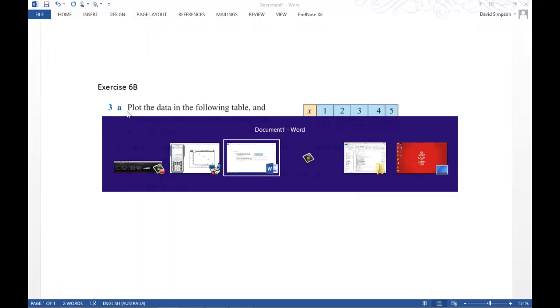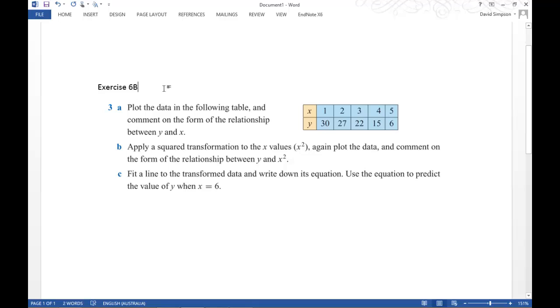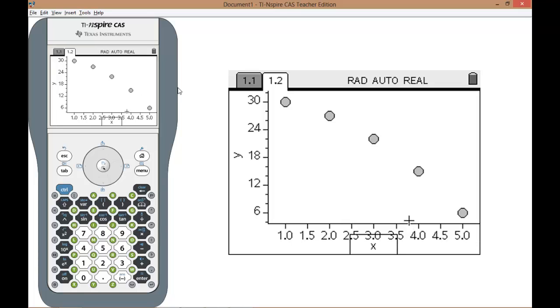Now if we go back to the question it says plot the data in the following table and comment on the form of the relationship between y and x. We're looking at this diagram here. You can see that the points begin up around 30 and then they begin to drop off getting, dropping off quicker and quicker as we go along the x axis. So this is not a linear relationship. It is a negative relationship but it's certainly not linear.